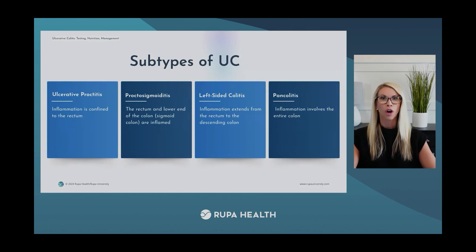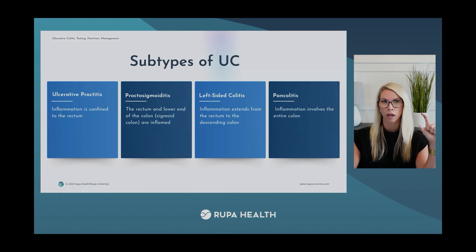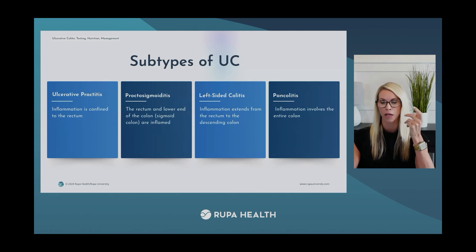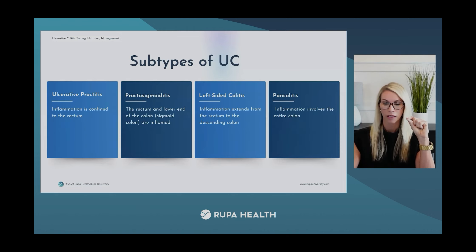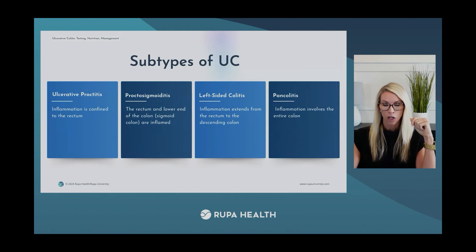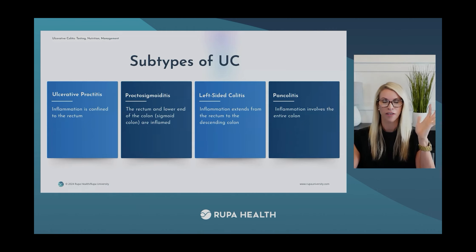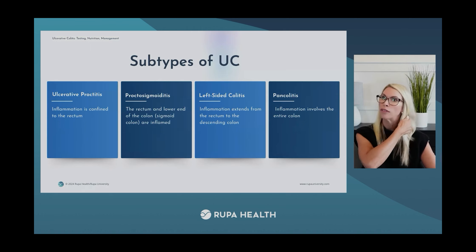There are subtypes of ulcerative colitis, classified by location and what is affected in the colon. You might see these after a client has undergone a colonoscopy. Proctitis is confined to the rectum. Proctosigmoiditis involves the rectum and sigmoid colon. Left-sided colitis extends from the rectum to the descending colon. And pancolitis involves the entire colon.